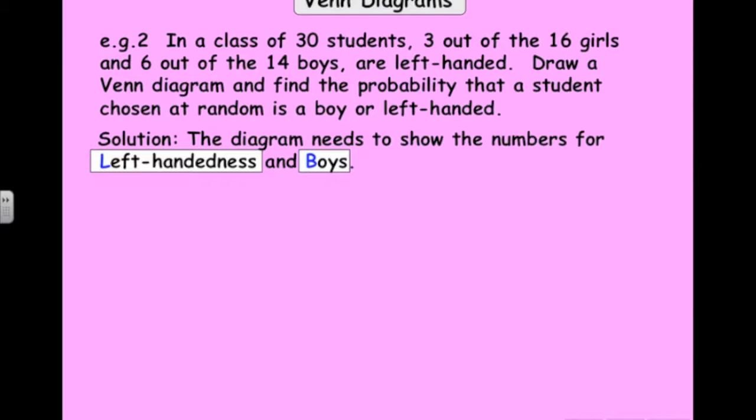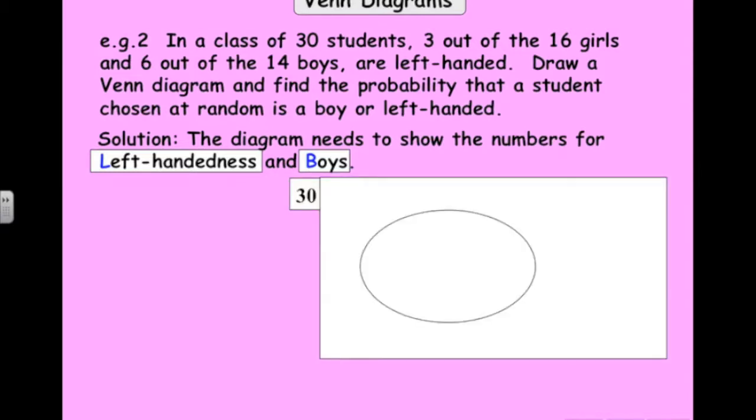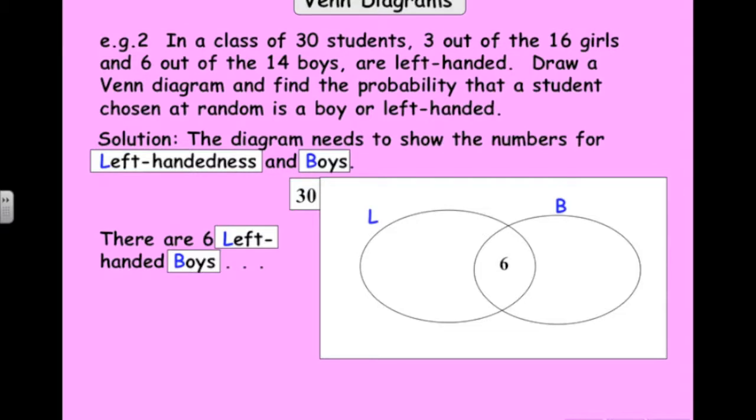The two events I'm going to define is someone being left-handed and someone being a boy. There's all the left-handers, there's all the boys. Let's look at the numbers here. We've got 30 students altogether. First of all, there's 6 boys that are left-handed. Therefore, the number in the middle, that is the intersection, is 6. The total number of boys is 14, which means there's 8 boys that are not left-handed. So they're right-handed.